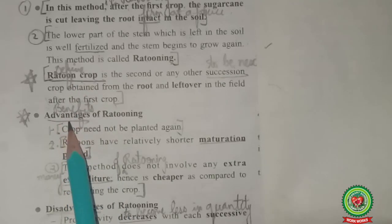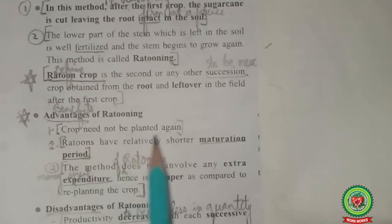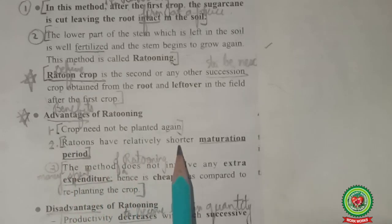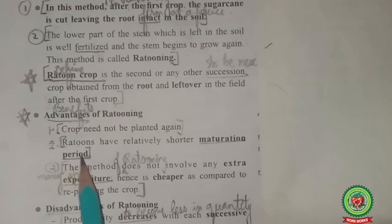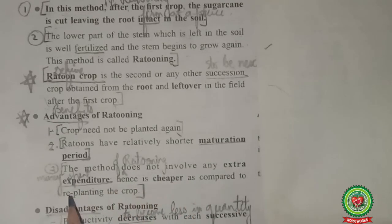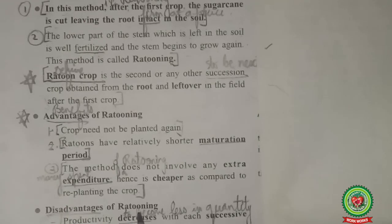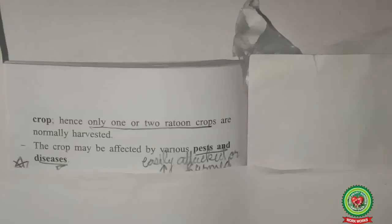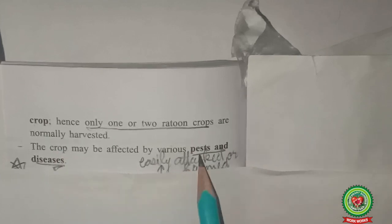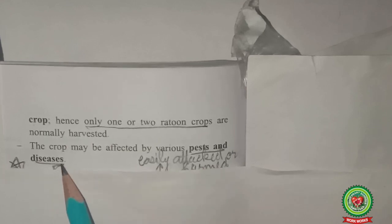The advantages of ratooning are: the crop need not be planted again — farmers do not need to grow seeds repeatedly; ratoons have a relatively shorter maturation period; and ratooning does not involve any extra expenditure, making it cheaper compared to re-planting. The disadvantages are: productivity decreases with each successive crop, so only one or two ratoon crops are normally harvested; and the crop may be affected by various pests and diseases.